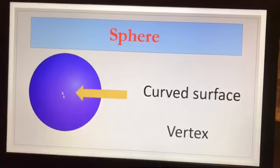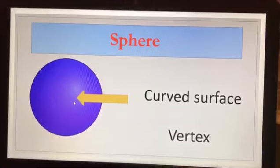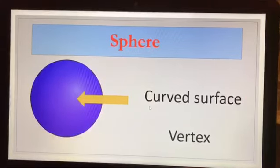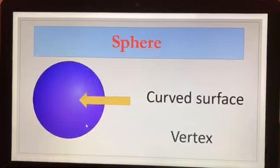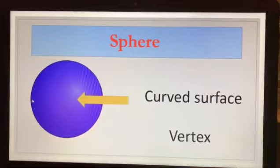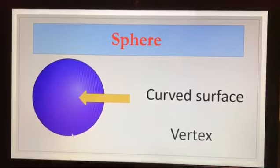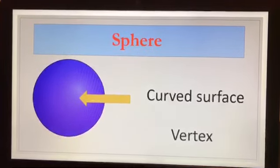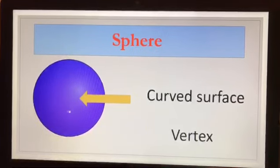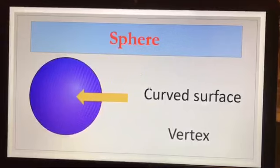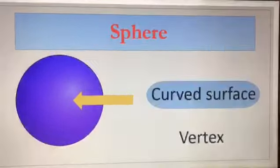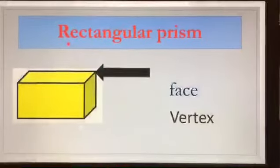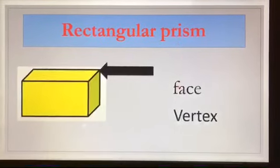This is the sphere. Let's see this shape — it is round like a circle. Now let's see the arrow. There is a curved surface here. Is there a vertex? Vertex is a corner — can you see a corner? No, there is no corner. So the arrow is showing us that this is called a curved surface. We will circle the curved surface.